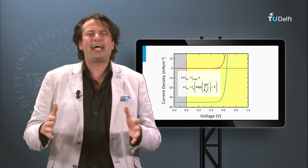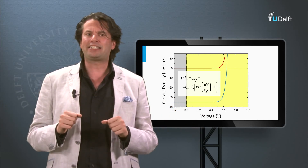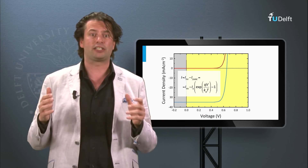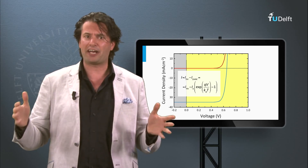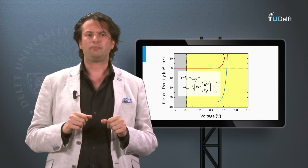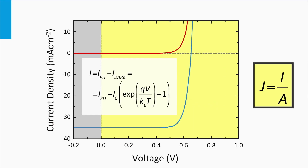If you increase the area of a solar cell, the total current of the solar cell increases as well, so the current depends on the area. In the lab, researchers like to use the unit current density J, which is the current generated per area. The advantage of this unit is that you can compare different solar cell technologies, as not every technology generates the same amount of current per square meter.